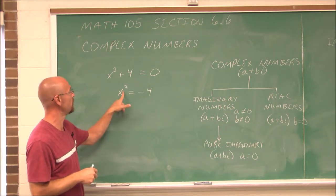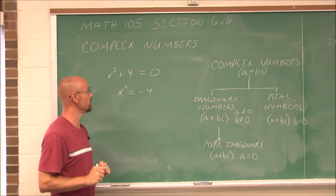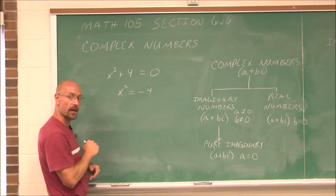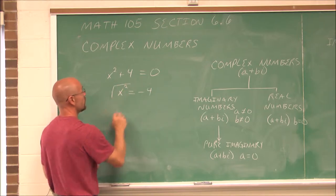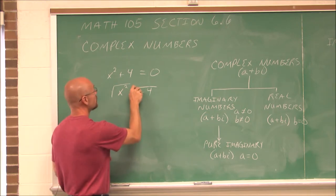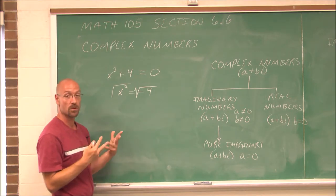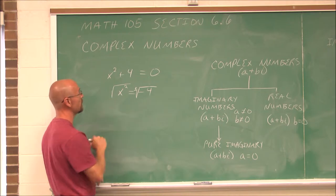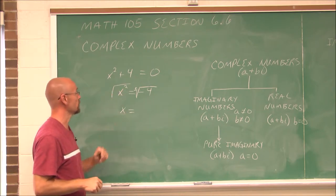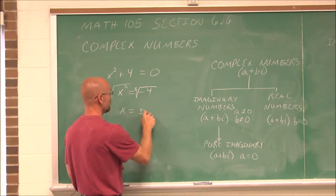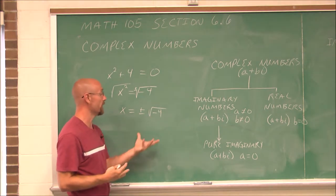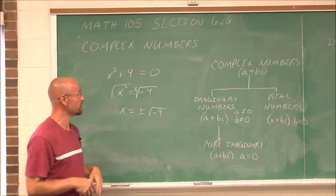I can identify that there is no value squared that gives me a negative, at least not a real value. So let's introduce a square root here — if I take the square root of both sides, I can get rid of that squared value. We have to introduce a plus or minus because it could be two different values. The square root of x squared is just x, and we get plus or minus the square root of negative 4, which is not a real value. So we have to come up with some way to deal with this — and that is the complex number system.